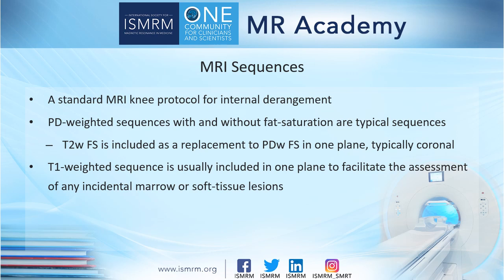Proton density-weighted images, T2-weighted images with or without fat suppression, and T1-weighted images are the main MR sequences for internal derangement of the knee. Proton density-weighted sequences with and without fat suppression are the typical sequences for the knee. T2-weighted fat suppression sequence is included as a replacement to the proton density-weighted fat-suppressed image in one plane, typically the coronal plane. The T1-weighted image sequence is usually included in one plane to allow evaluation of any incidental bone marrow lesions or soft tissue lesions.